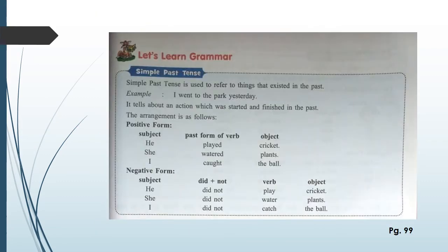Now open page 99 of the English language textbook. Our topic is simple past tense. Simple past tense is used to refer to things that existed in the past — actions that were made in the past. Have a look at the example: 'I went to the park yesterday' — main kal park gaya. It tells about an action which was started and finished in the past.